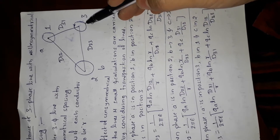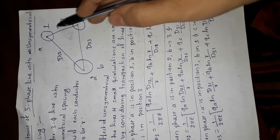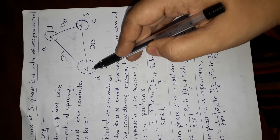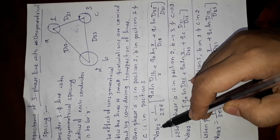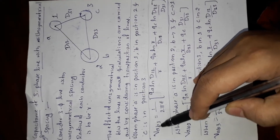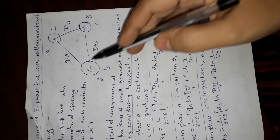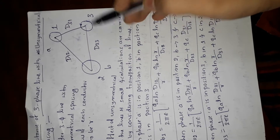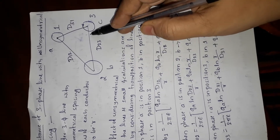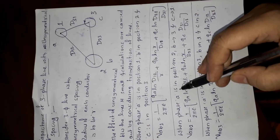Next, due to charge qc at conductor c: the second distance divided by the first distance — second is b, first is a — so V_ab gives us b to c then a to c. Therefore the term is d23 divided by d31.